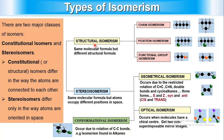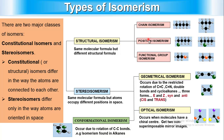Structural isomers have the same molecular formula but different structural formulas. Constitutional and structural mean the same thing. Structural isomers are further divided into three main types: chain isomers, position isomers, and functional group isomers. These are illustrated with black atoms representing carbon and white atoms representing hydrogen.